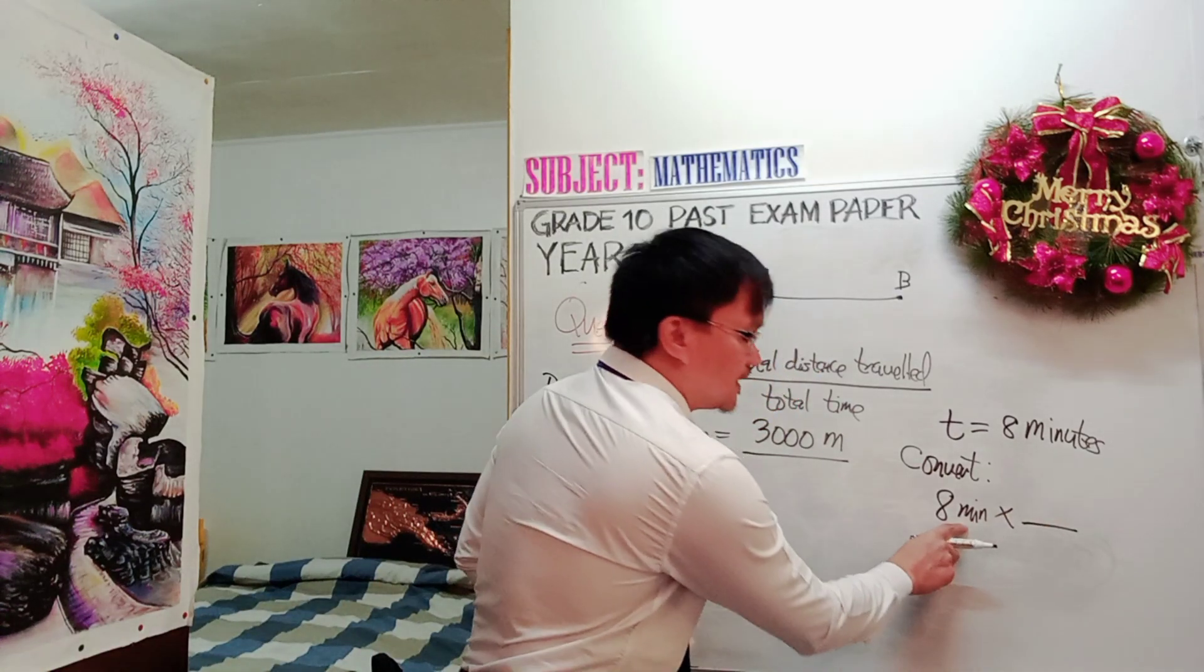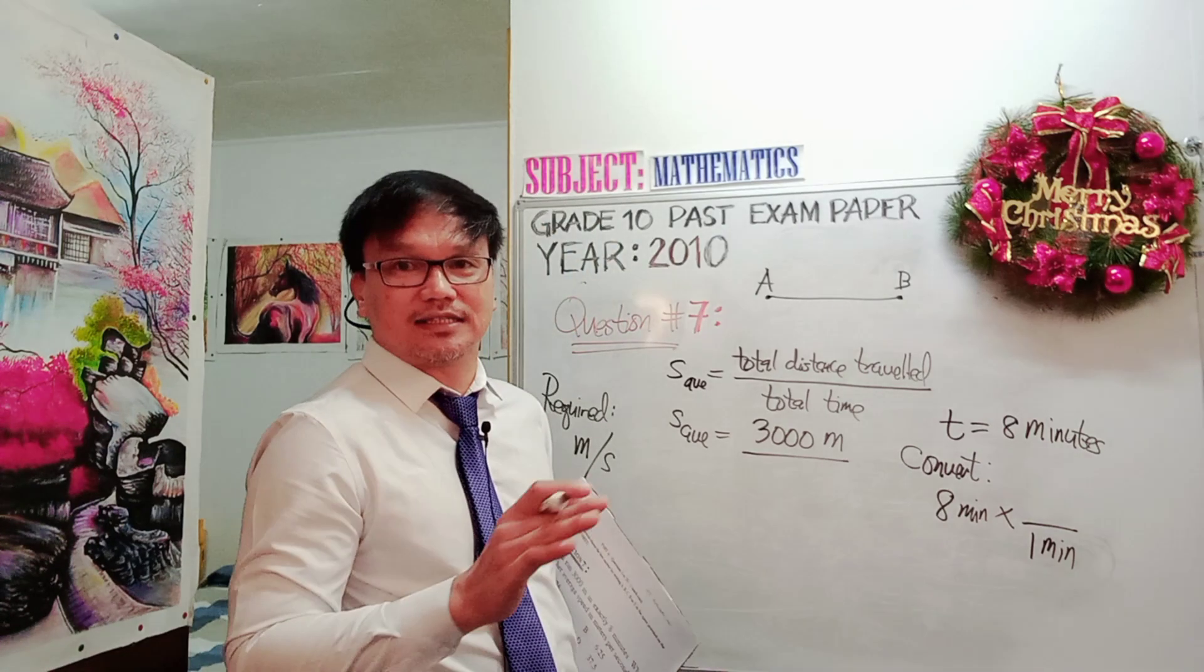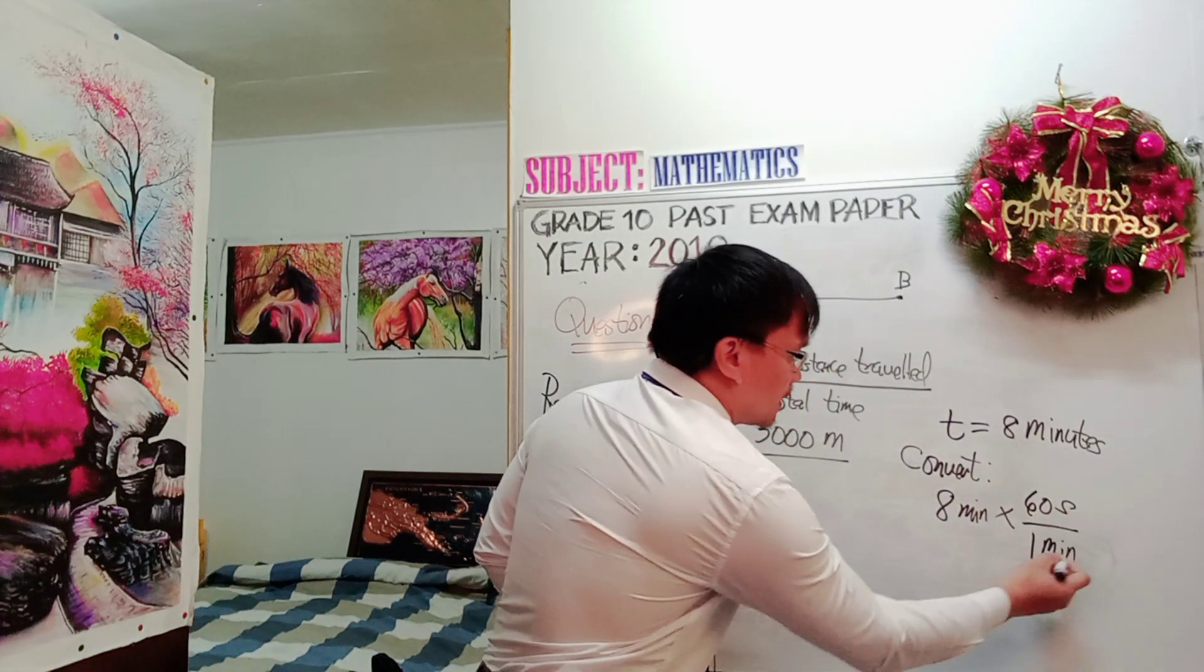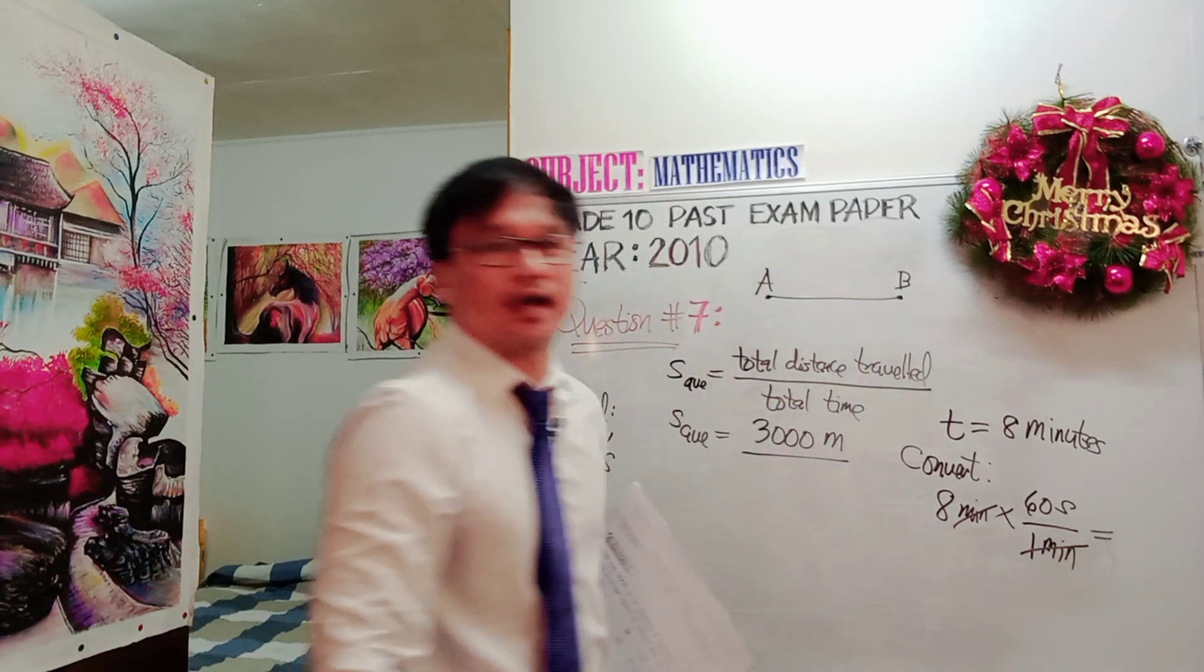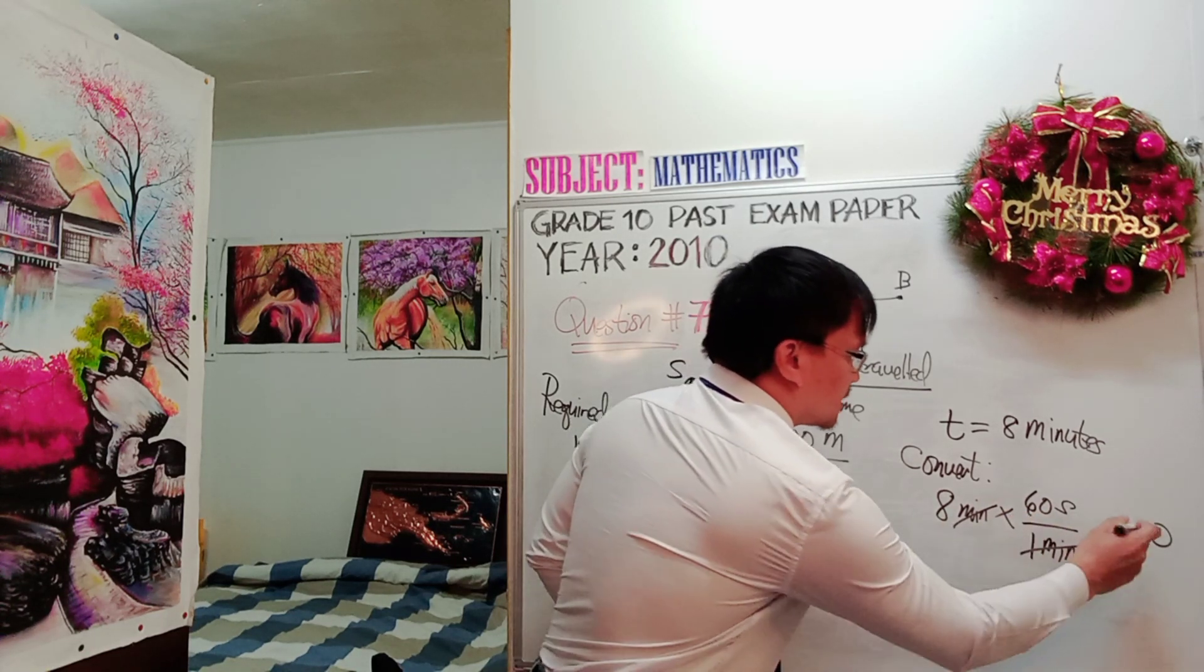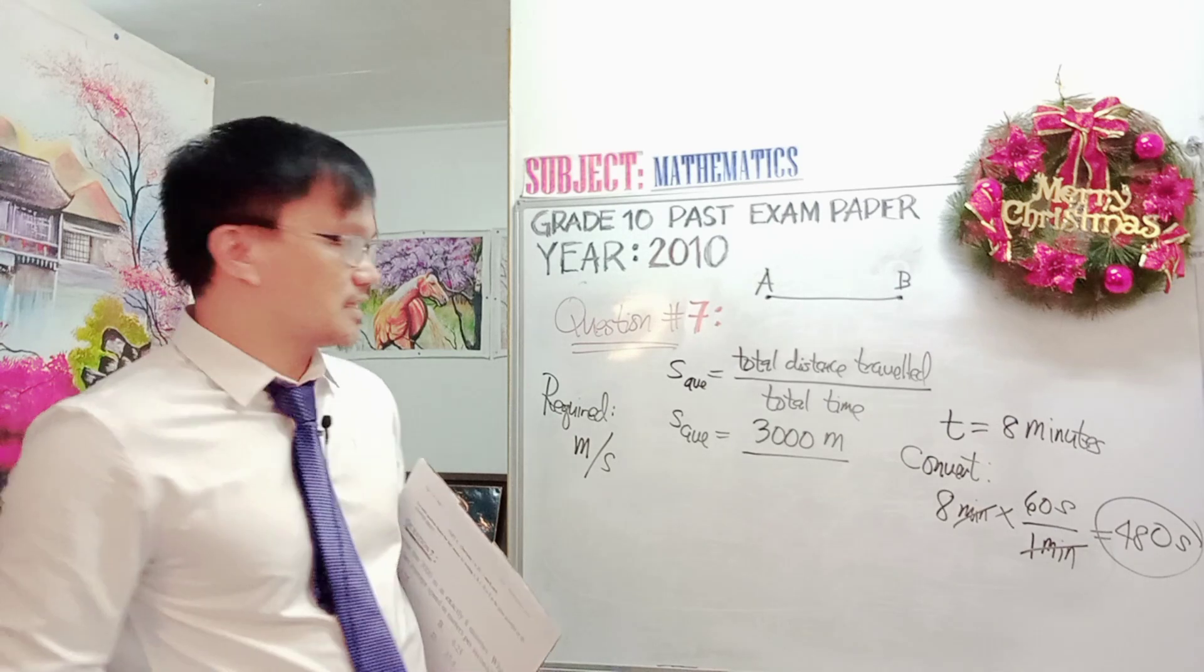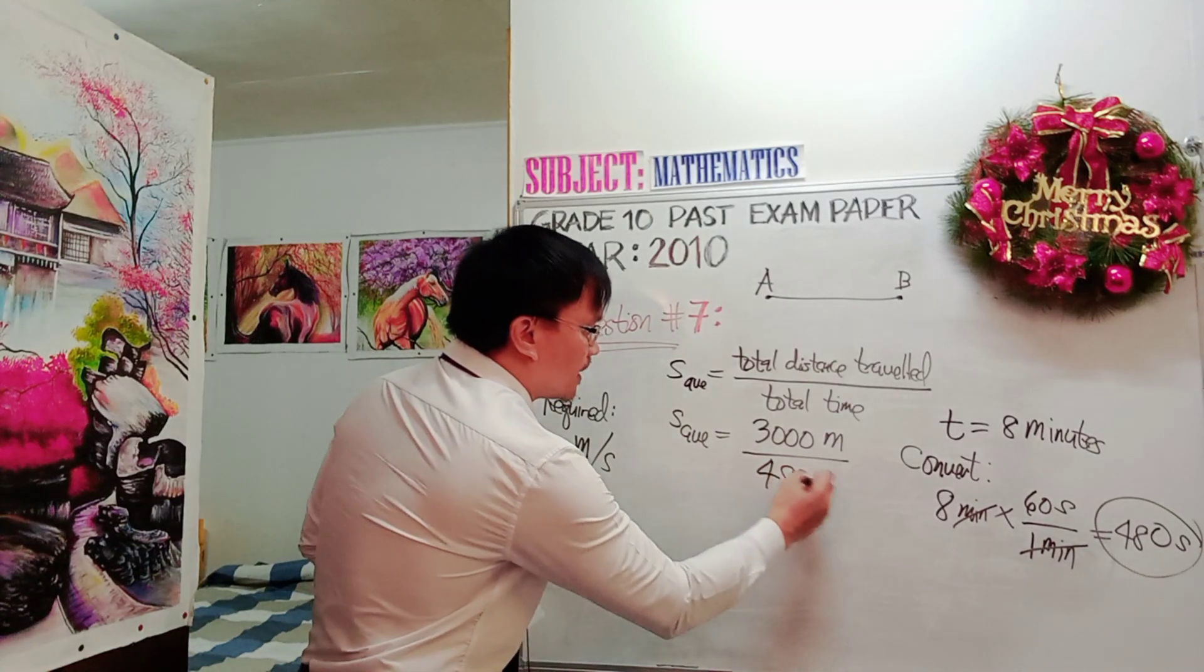Since our minute is in the numerator, then we will have 1 minute in the denominator so that we can cancel it later. There are 60 seconds in 1 minute. So we have now 60 seconds. You cancel now the minute and the minute. Now you are left with 8 times 60 seconds, that is 480 seconds. So therefore, we have a total of 480 seconds, the equivalent value of the total time 8 minutes.